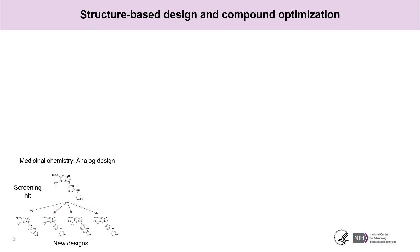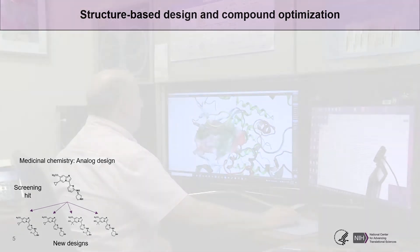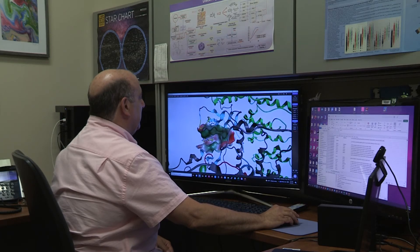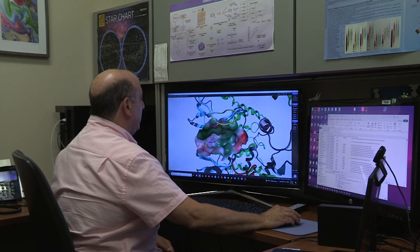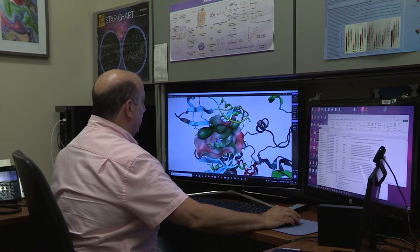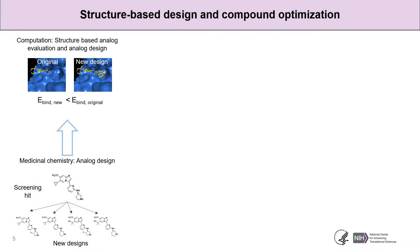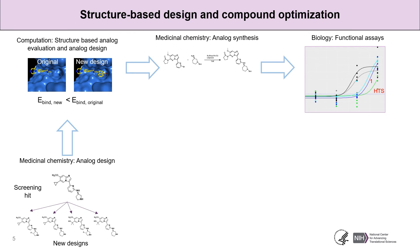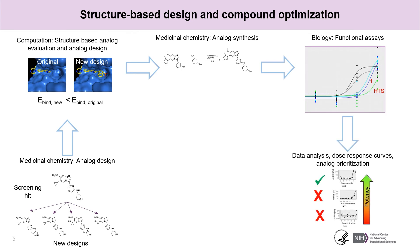After HTS, medicinal chemists create analog hypotheses based on the original HTS hits that may be more potent. Using the target protein crystal structure, the molecular modeler will model the lead and all new designs into the protein binding site. The binding energy is computed. New designs predicted to be more potent than the original HTS are synthesized by the chemists and tested by the biologists. A chemoinformatician analyzes the resulting assayed data, constructs dose-response curves, and sorts analogs most potent to least.